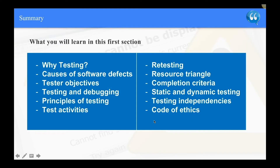What will we learn in this first section? The first question is: why do we test? Why do we test software? What are the causes of defects in software? What are the testers' objectives — what are you looking for? The differences between testing and debugging, and who is responsible for each. What are the principles of testing? What are the daily activities of testers? Re-testing — what does that mean? The resource triangle, the completion criteria, reports, static and dynamic testing, testing dependencies, and finally the code of ethics of a software tester.